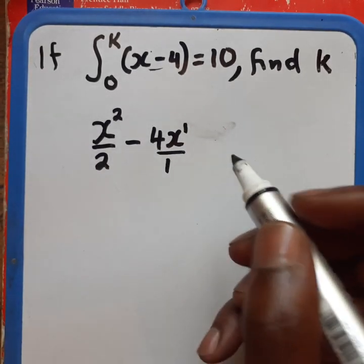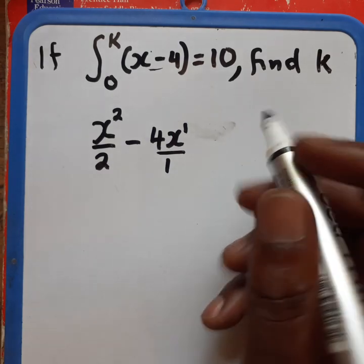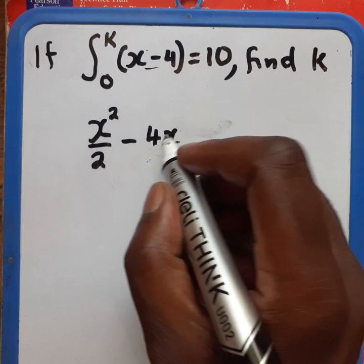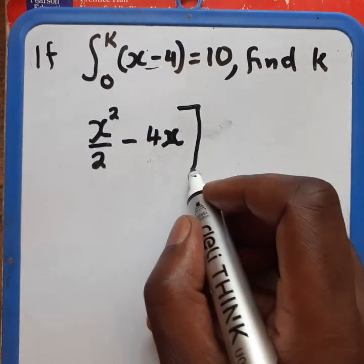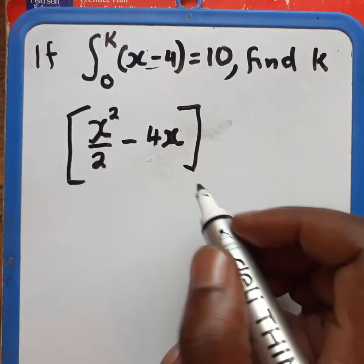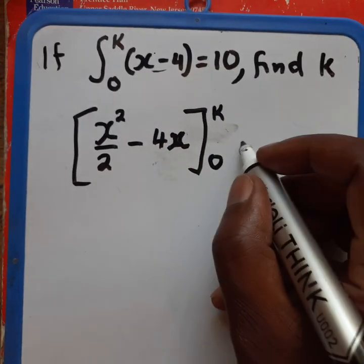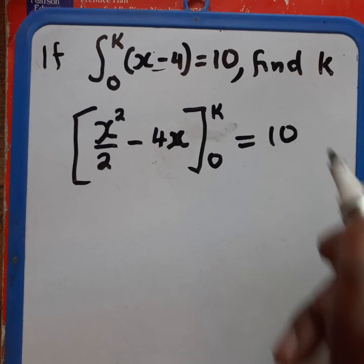Divided by 1. But this does not change anything. So we can ignore this part. So this is going to be 4x. And we have 0. This is equal to 10.